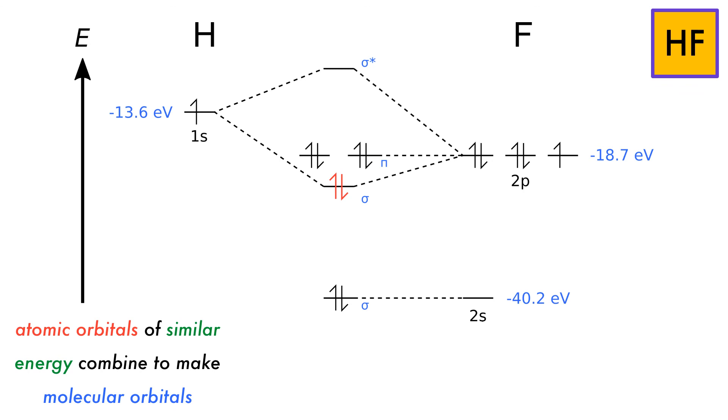The other two 2p orbitals of fluorine are non-bonding as they don't have a hydrogen orbital to interact with. The 1s fluorine orbital is too low in energy to interact with the hydrogen atomic orbitals. The bond order of HF is 1 because there are only two bonding electrons and zero anti-bonding electrons. Non-bonding electrons do not contribute to the bond order.